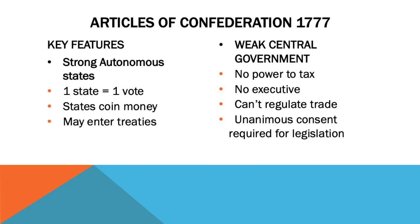The first form of government in the United States was established by the Articles of Confederation, and this form of government had a significant number of flaws. The central government had no power to tax, there was no executive or presidency, trade could not be centrally regulated, and unanimous consent was required for the passage of all legislation. So essentially each state operated as its own little country with its own set of rules, currency, and political autonomy, which made it extraordinarily difficult for a centralized government to function and exert collective influence.